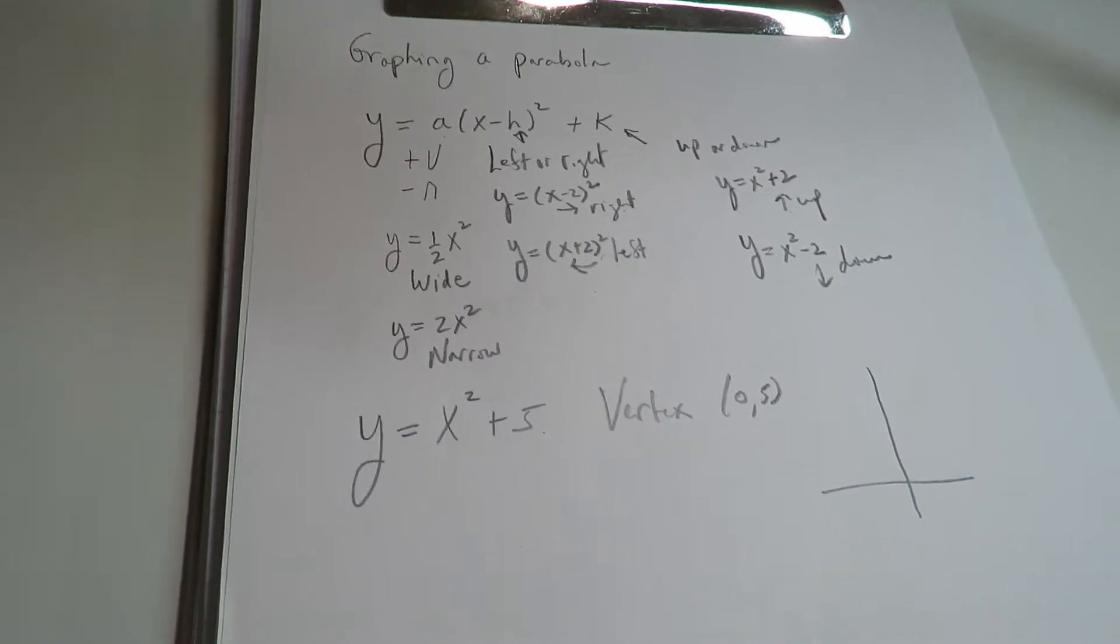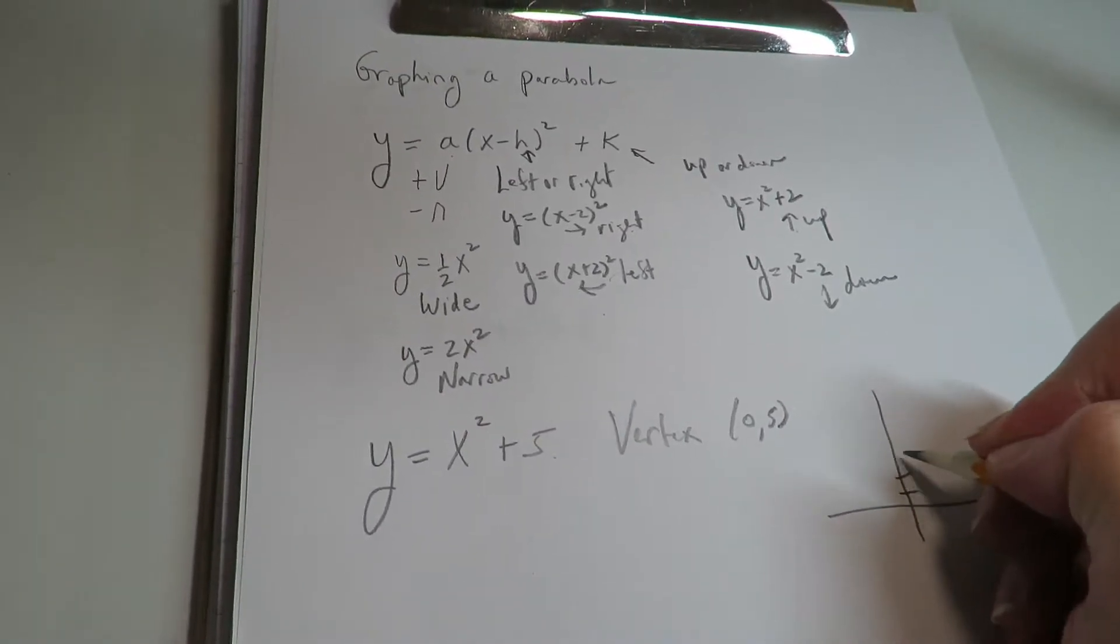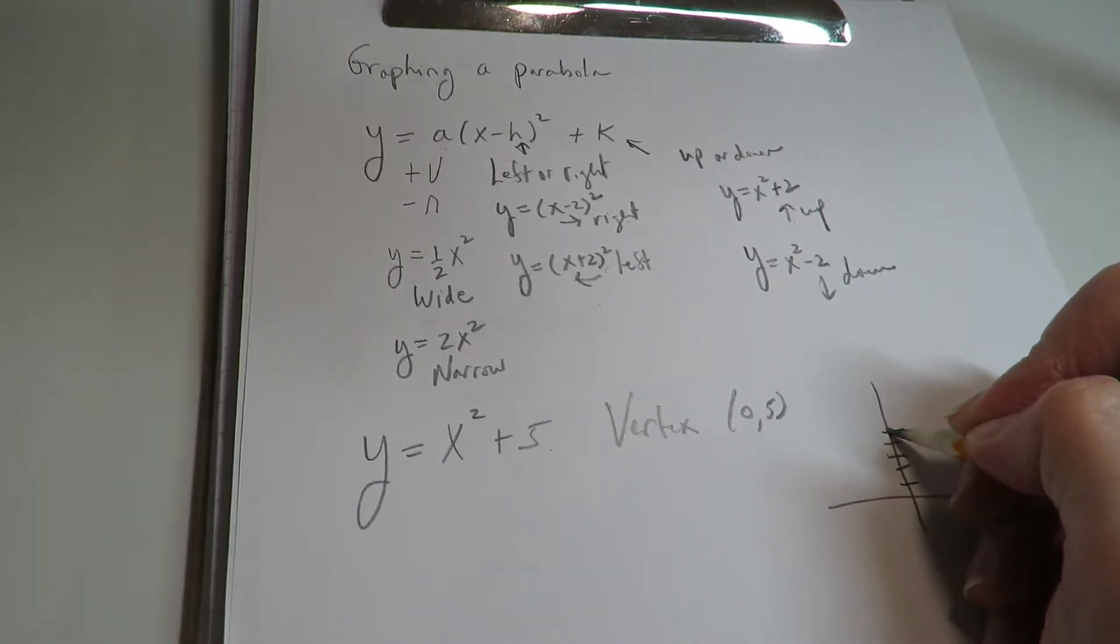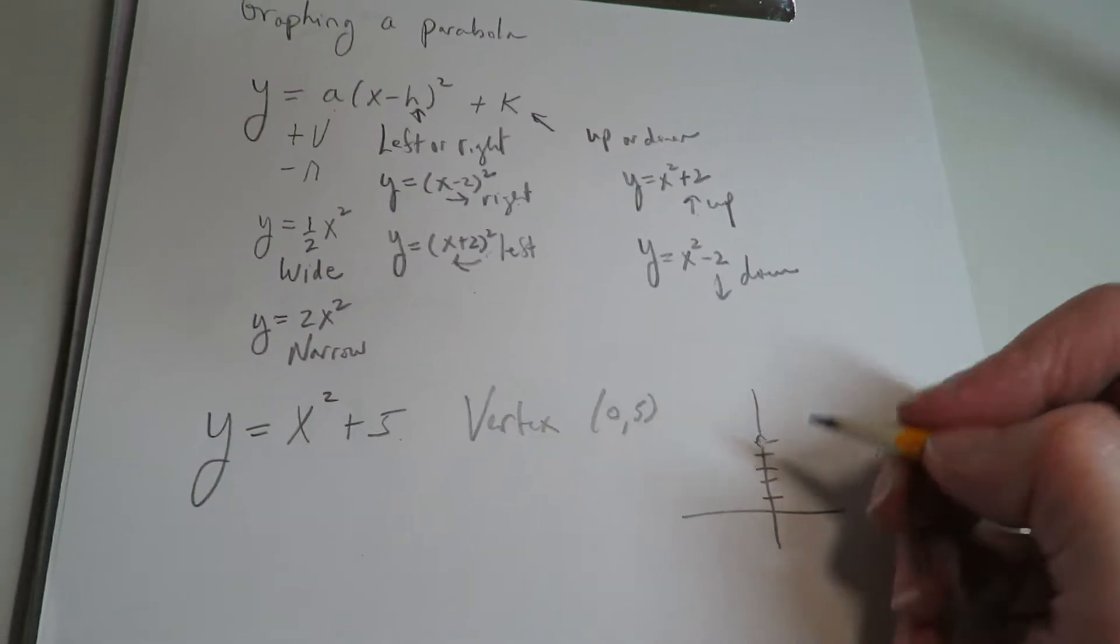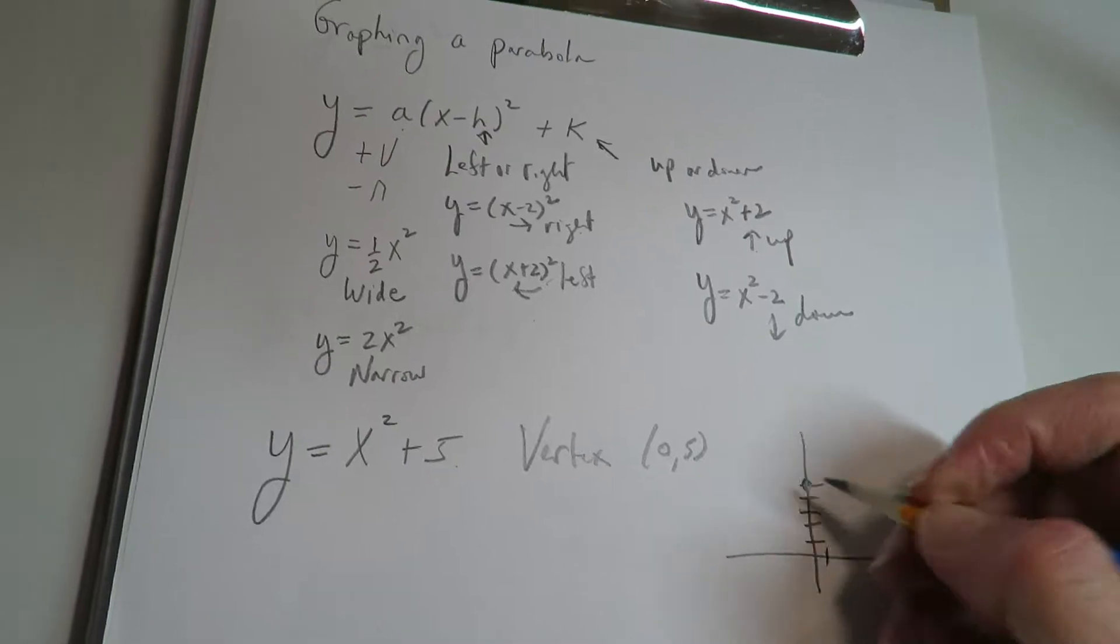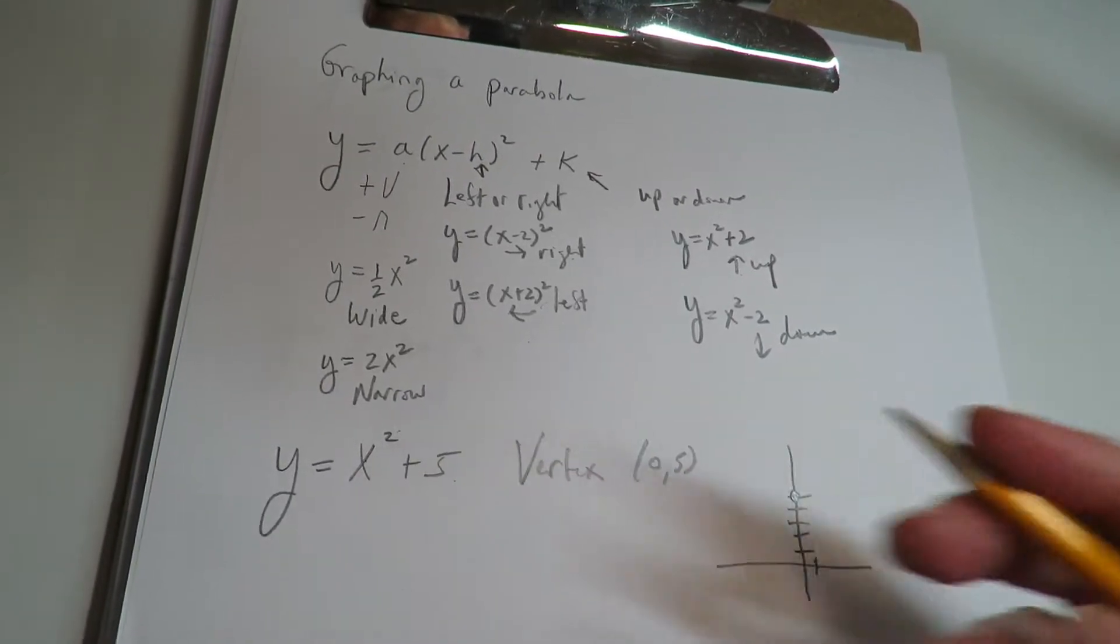So if I just rough sketch that, the center is at 0, 5. And then if I put like a point on either side, so like if x is 1, 1 squared plus 5 is 6.